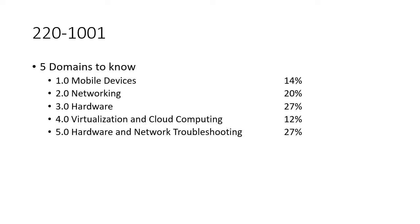What I do with these percentages is look at them as a guide. If you look at hardware, number three, that's 27%, and troubleshooting is also 27%. In my head, that's a lot more than 14% and 12%. So if I'm crunched for time, I'm focusing most of my attention on the higher percentages. I'm not saying don't study domains one and four, but maybe not put as much effort into those if you're on a crunch. If you've got 30, 60, or 90 days, you have all the time you need.